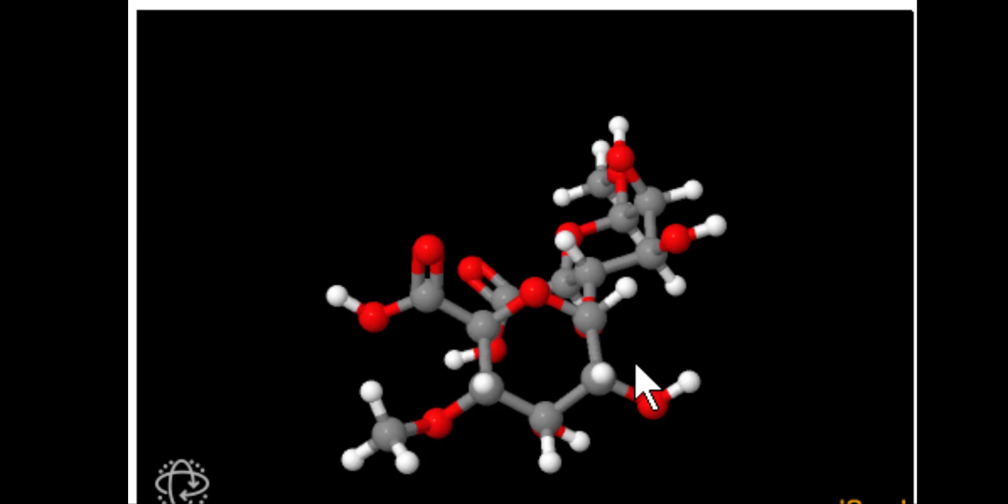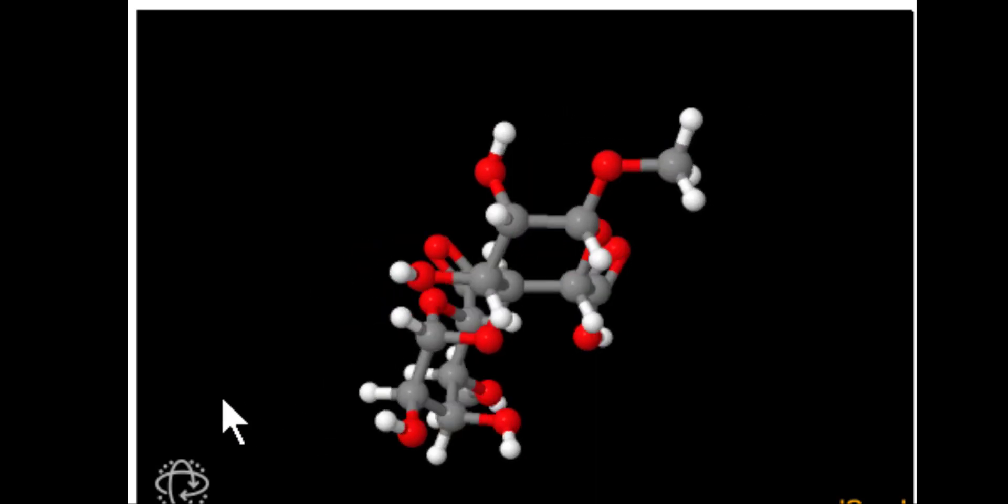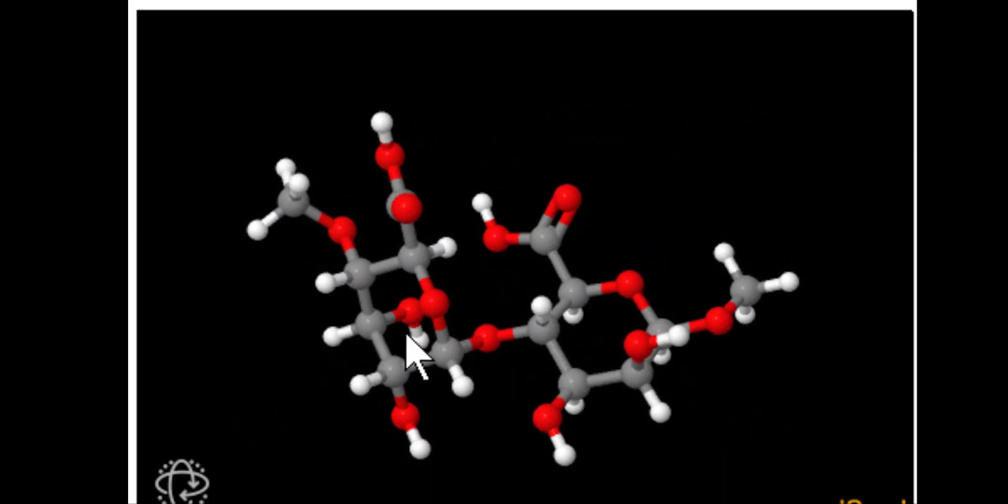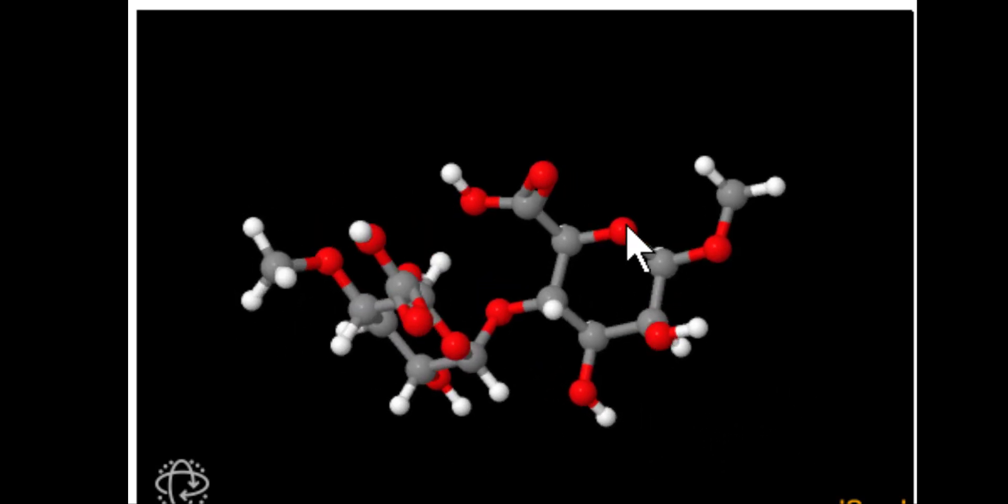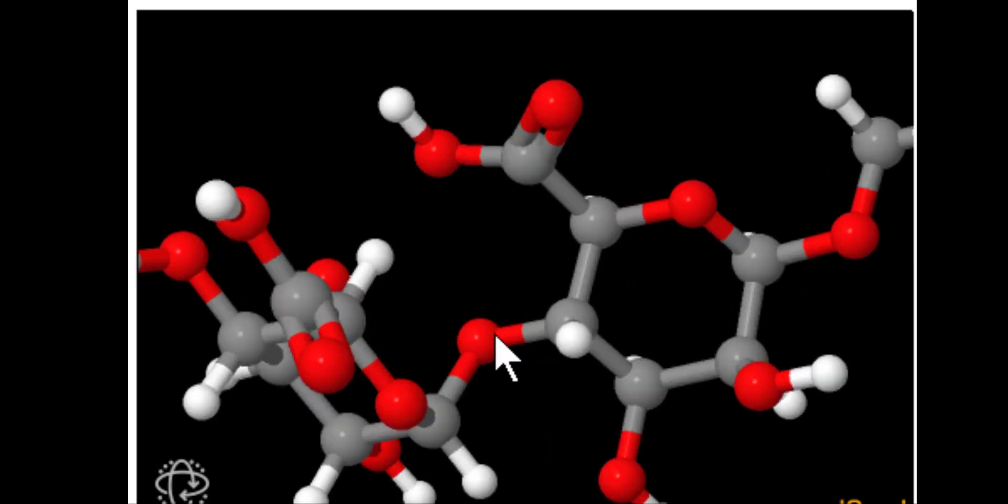So this is basically the generic structure for the monomer that makes up this entire polymeric chain. Let's see if we can find it repeated on the other side of the molecule. Rotate it around here, and right there. Can you see it? One, two, three, four, five, six, off to the left, carbon, double bond, oxygen, OH.